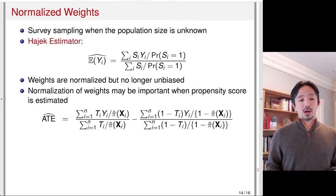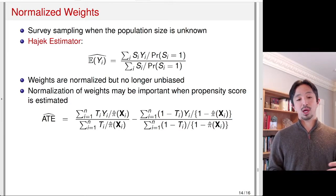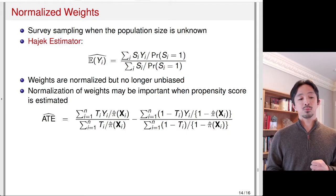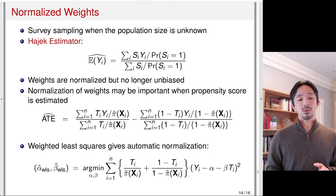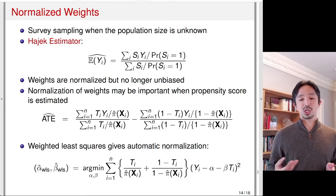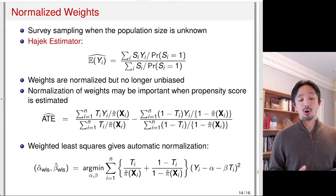In the context of causal inference, we can do the same thing — divide by the sum of the weights, which appears in the denominator for both treated and control observations — to normalize the weights so they are less extreme. Weighted least squares does this automatically, since in weighted least squares the weights are only given proportional to a constant, so you get normalization automatically.